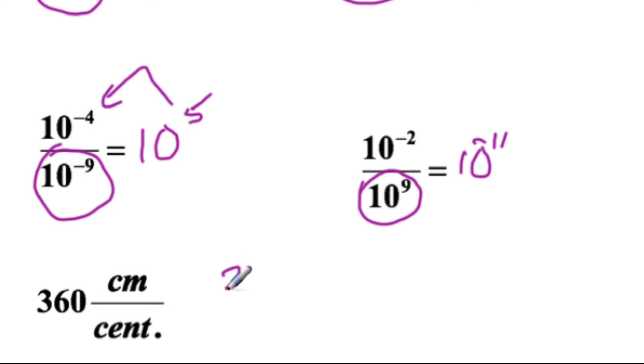If we want to write that a different way, we could say that is 360 centimeters times century to the minus one power. And the Oxford English dictionary wants us to put a period here when we abbreviate.